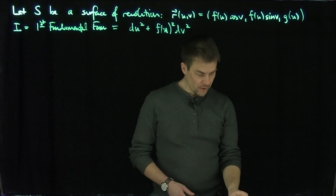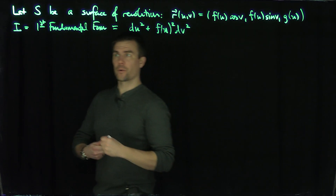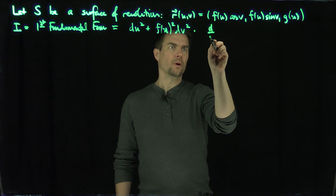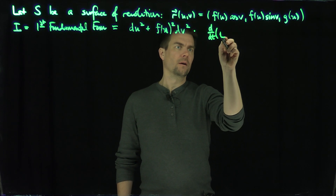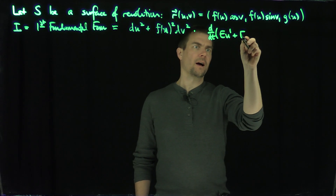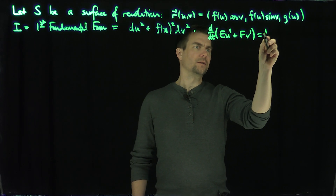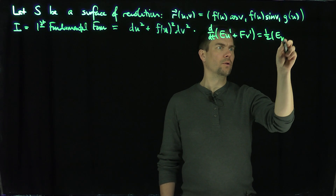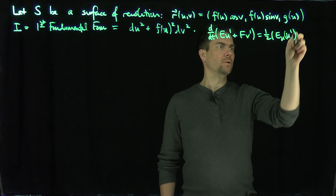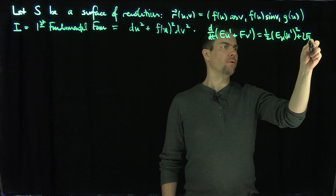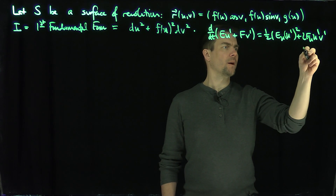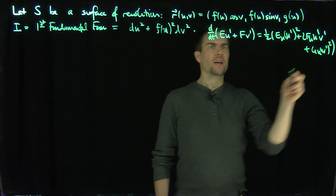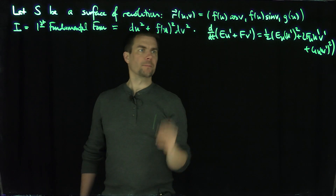Now I'd like to write down the geodesic equations. Recall we have two geodesic equations. The first is d/dt of (E·u' + F·v') = one-half(E_u·u'² + 2F_u·u'v' + G_u·v'²). We get the second equation with F and G in those places.